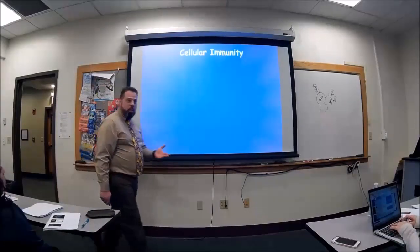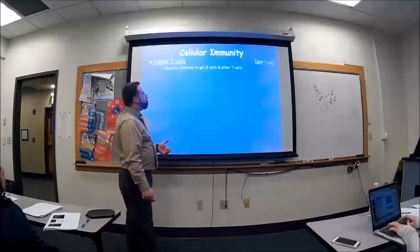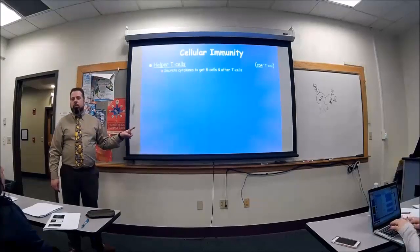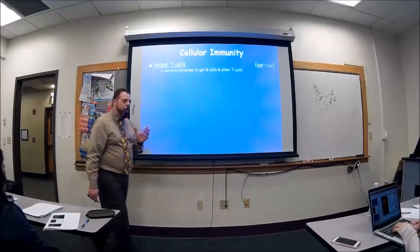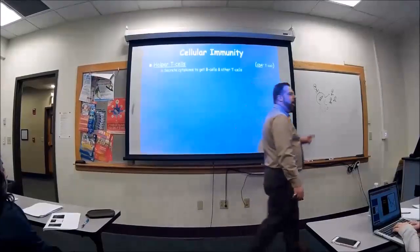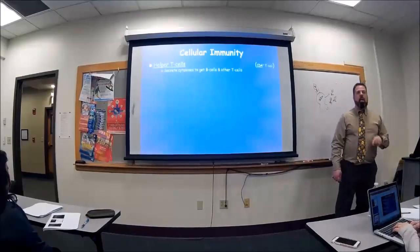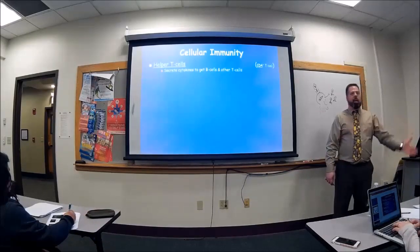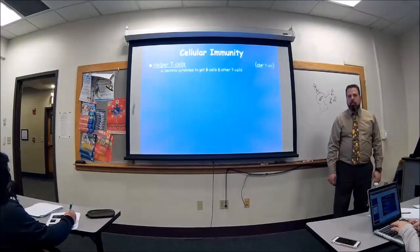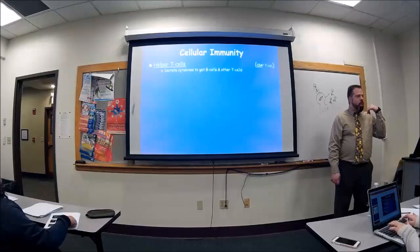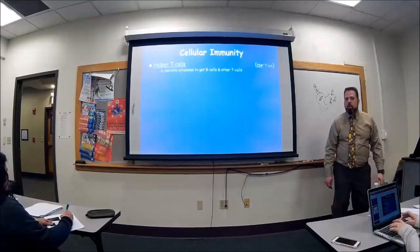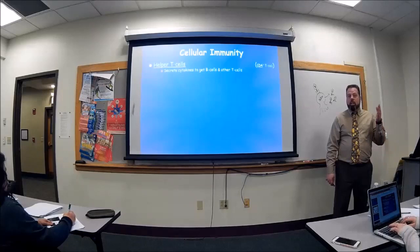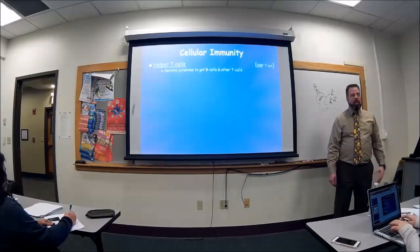Now cellular immunity is where the T cells come in. We have helper T cells — that's our dispatcher. I personally think, and a lot of people think, the helper T cell is the most important cell in the immune system. If you don't have the dispatcher, you're not going to get anything else there. Think about calling 9-1-1 and no one's answering. That's what HIV is doing — it's going to destroy the dispatcher.